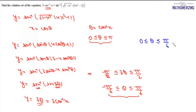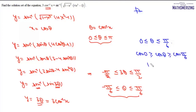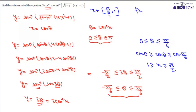Now we find the values of x using x = cos θ. Since cos is a decreasing function on [0, π/2], the inequality sign reverses: cos(0) ≥ cos θ ≥ cos(π/6), which gives 1 ≥ x ≥ √3/2. Therefore, the solution set of this equation is x ∈ [√3/2, 1]. This equation is valid when x lies between √3/2 and 1.